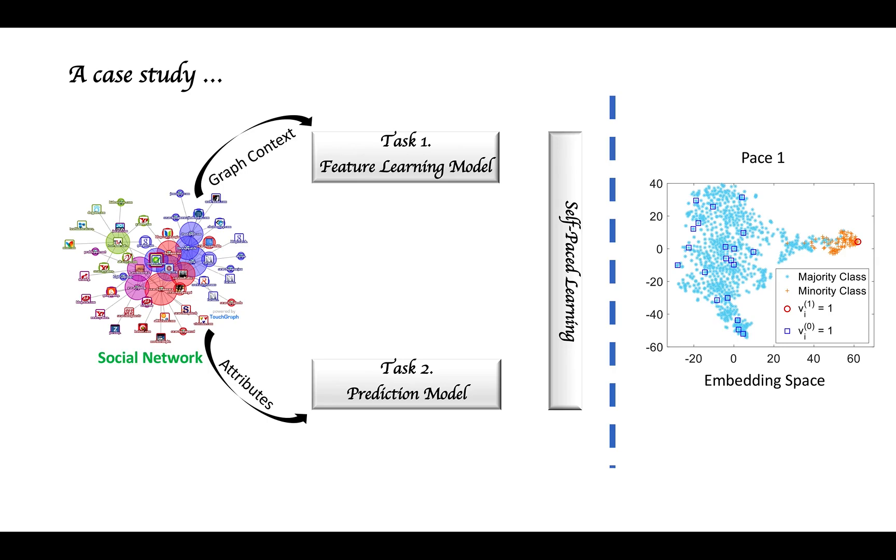For the self-paced learning process, we mainly have three stages. In the first stage, SPARC extracts the graph context and node attributes for the feature learning model and rare category prediction model. The second stage is the key step of our proposed SPARC model, which jointly selects the rare category-oriented graph contexts and reliable labels based on the self-paced learning scheme. In the third stage, the newly extracted graph node context pairs and labeled rare category examples are fed into the feature learning model and prediction model for training purposes.